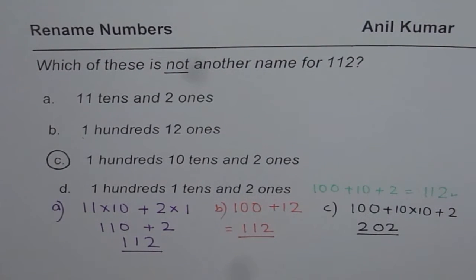Option C is the one which cannot be representing 112. I hope it explains the concept. Thank you and all the best.